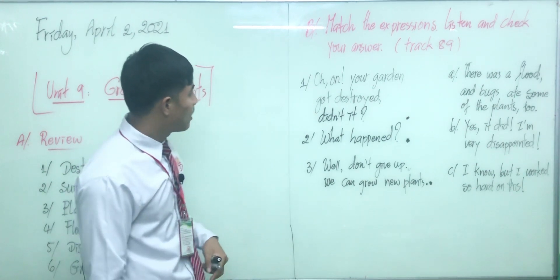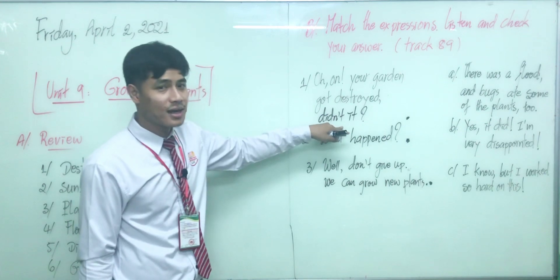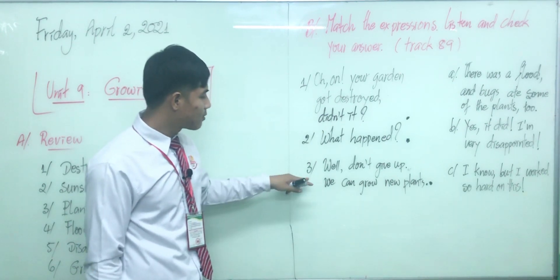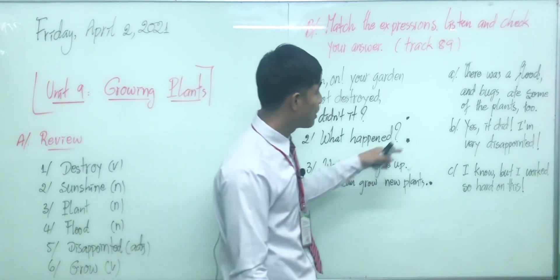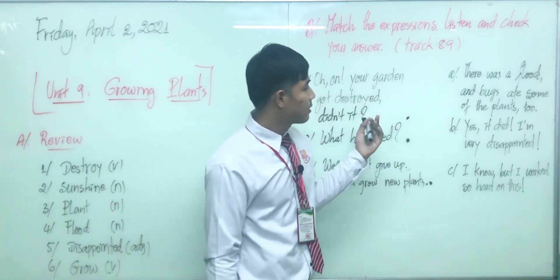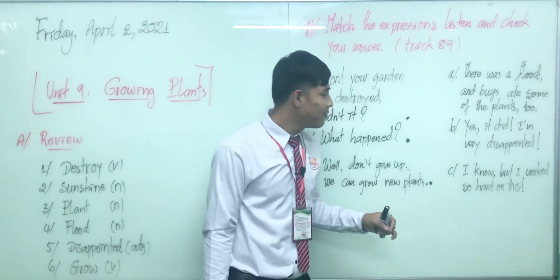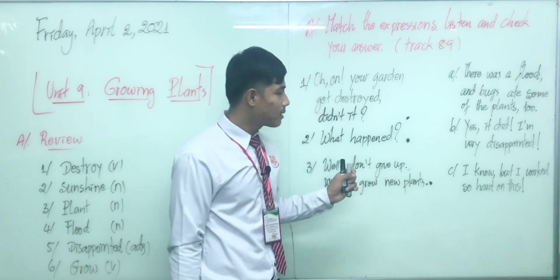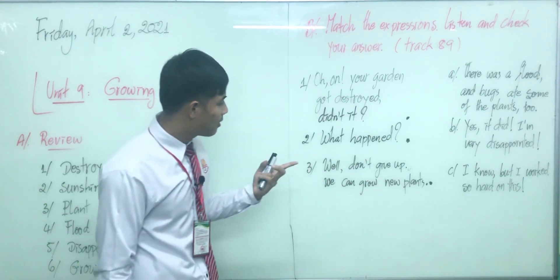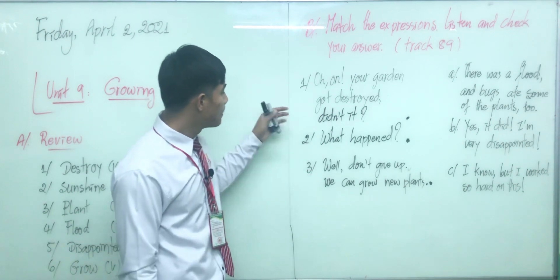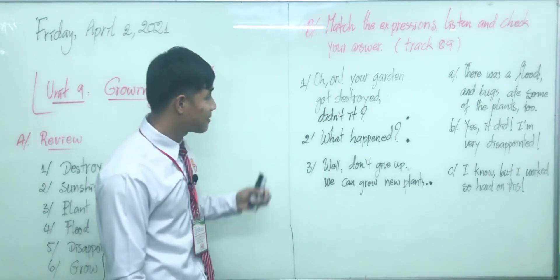Number one: 'Oh no, your garden got destroyed, didn't it?' — that's a question. Number two: 'What happened?' Number three: 'Well, don't give up, you can grow new plants.' Letter A: 'There was a flood and it destroyed some of the plants too.' Letter B: 'Yes it did, and I'm very disappointed.' Letter C: 'I know, but I worked so hard on this' — so he or she feels upset about what happened.